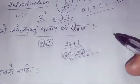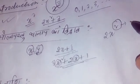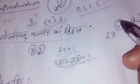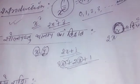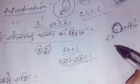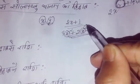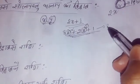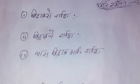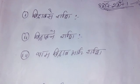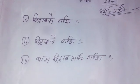1 squared is equal to 1. 2 squared is equal to 4. 4 squared is equal to 1. 1 squared is equal to 1 squared; 1 squared is equal to 1. 2 squared is equal to 1 squared; 1 squared is equal to 1.